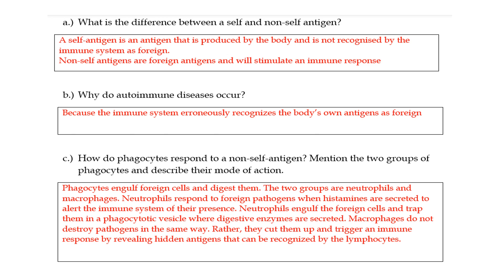Why do autoimmune diseases occur? Because the immune system recognizes the body's own antigens as foreign. Basically, the body is producing cells that are very similar to what would be considered foreign cells. The antigens on those cells are maybe damaged or they look different from what the body recognizes as its own, so the immune system starts to attack that.